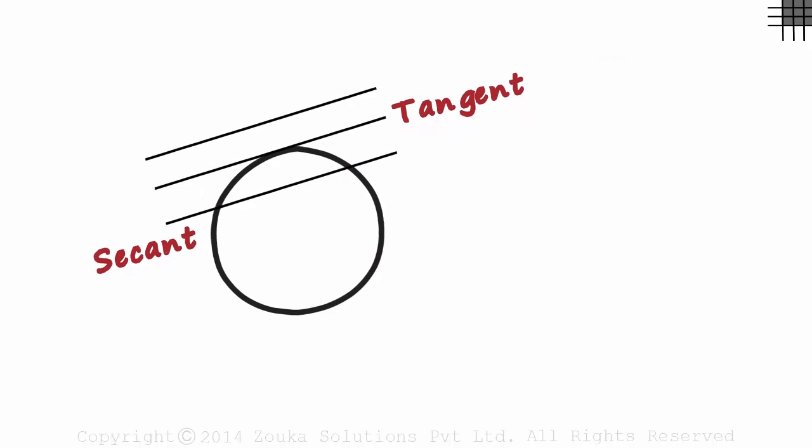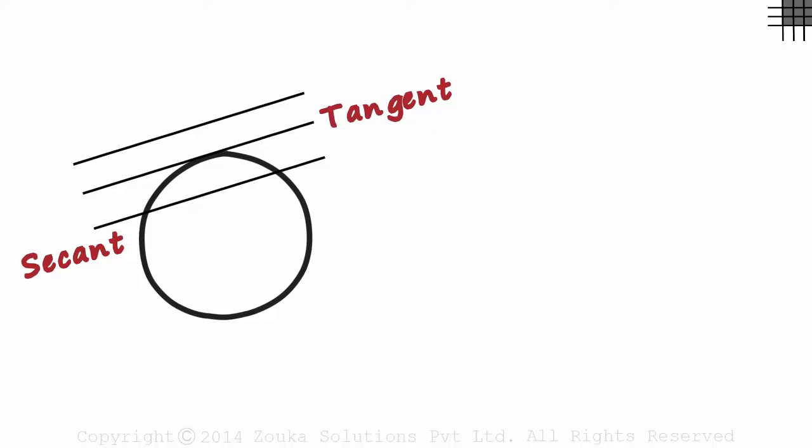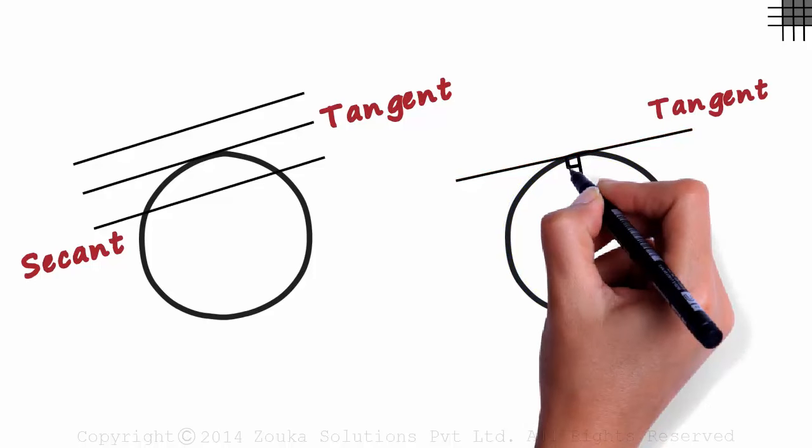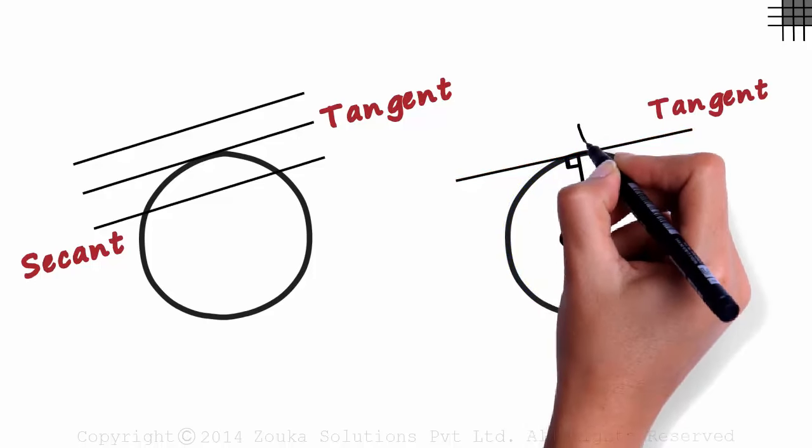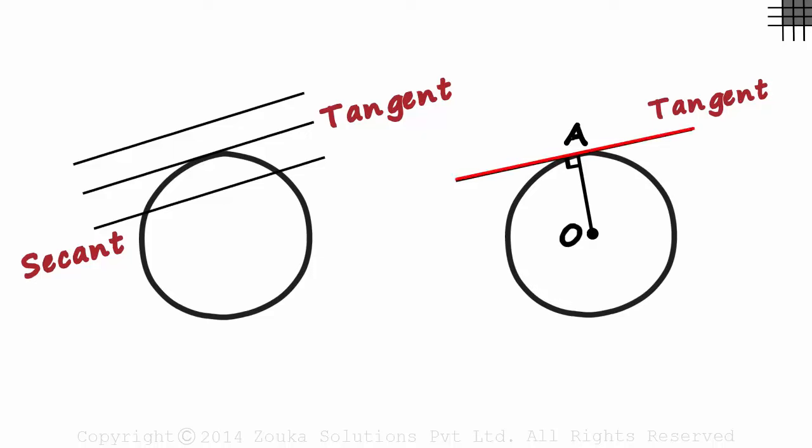Tangents have one very important property. Let this be a circle and this a tangent to it. The radius to the point where the circle and the tangent meet will always be perpendicular to the tangent. So OA will be perpendicular to this tangent.